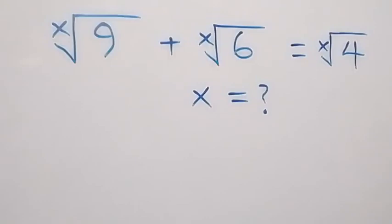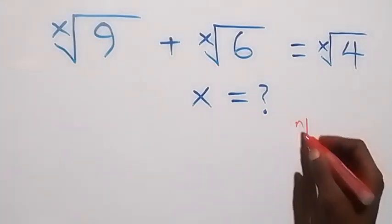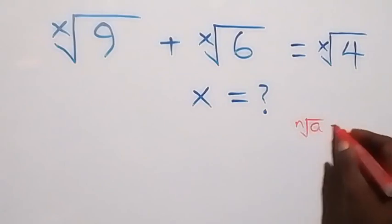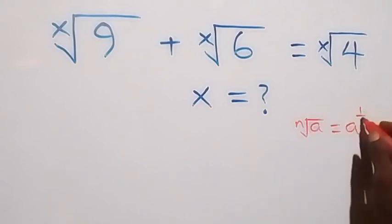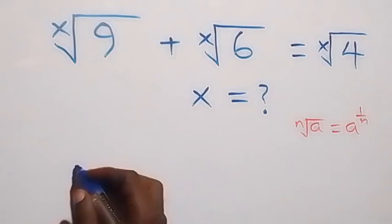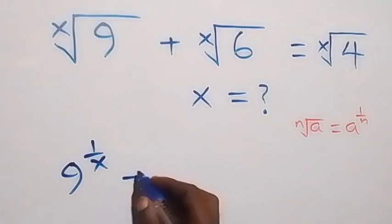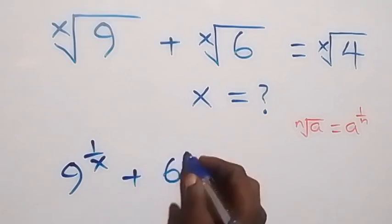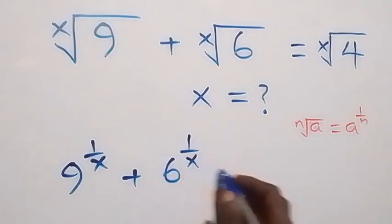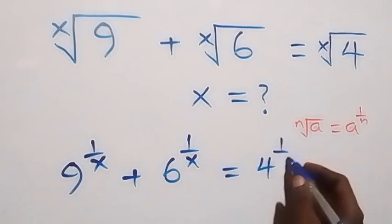Hello, you are welcome. How to solve for x in this nice math problem. When we have n-root of a, this can be written as a raised to power 1 over n. That means from what we have here, this can be written as 9 raised to power 1 over x, plus 6 raised to power 1 over x, equals 4 raised to power 1 over x.